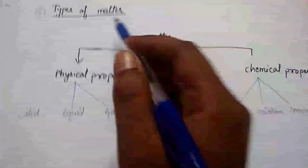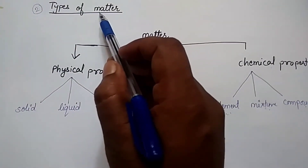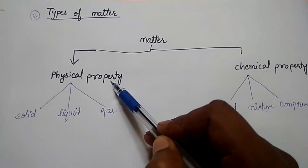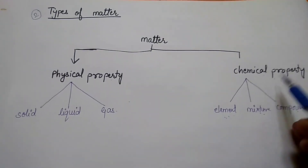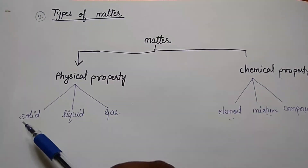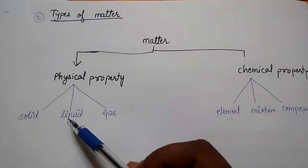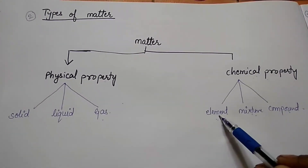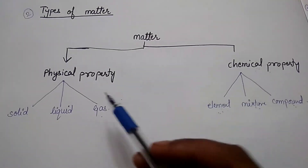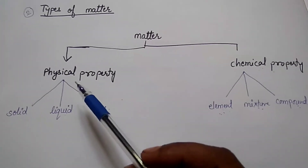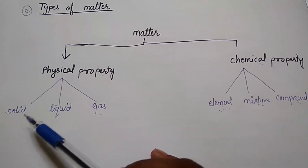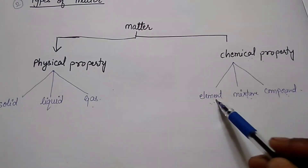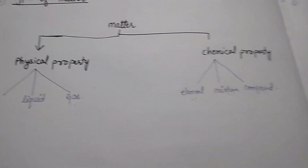Our second point is types of matter. In modern science, matter is classified on the basis of physical property and chemical property. On the basis of physical property, matter is divided into three parts: solid, liquid, and gas. On the basis of chemical property: element, mixture, and compound. In the first chapter we read the physical properties of solid, liquid, and gas, and in the second chapter we will study chemical properties — element, mixture, and compound.